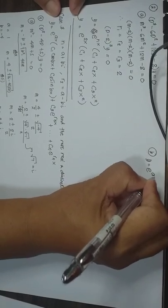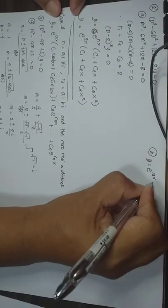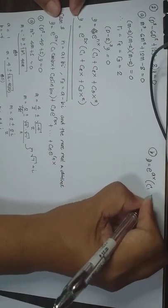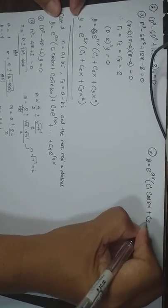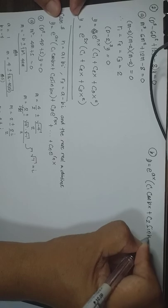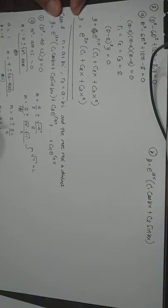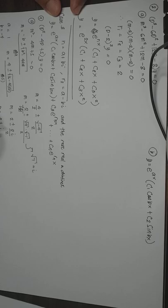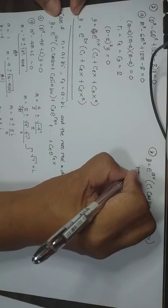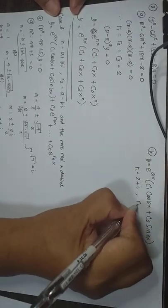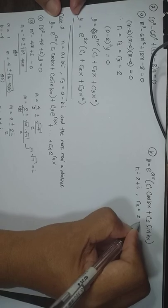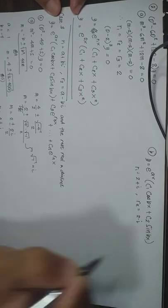The solution is Y equal to E raised to AX times C sub 1 cosine BX plus C sub 2 sine BX. In this solution, take note that R sub 1 is equal to 2 plus i and R sub 2 is equal to 2 minus i, which follow the form A plus Bi and A minus Bi.